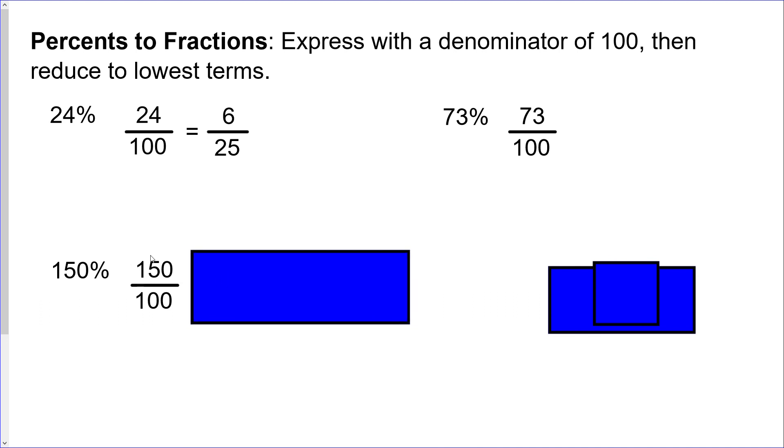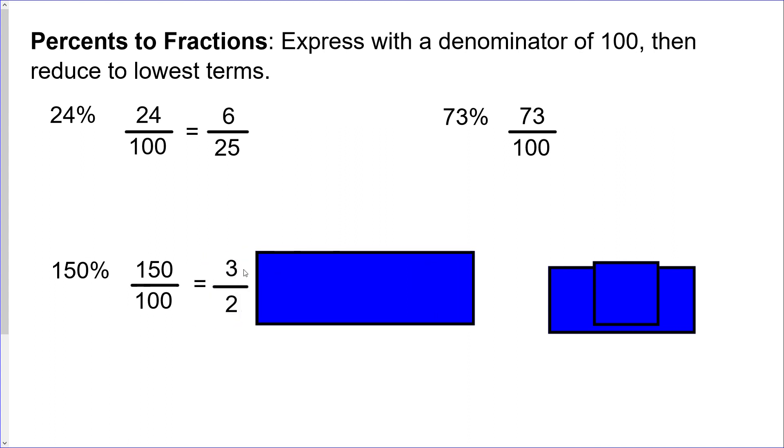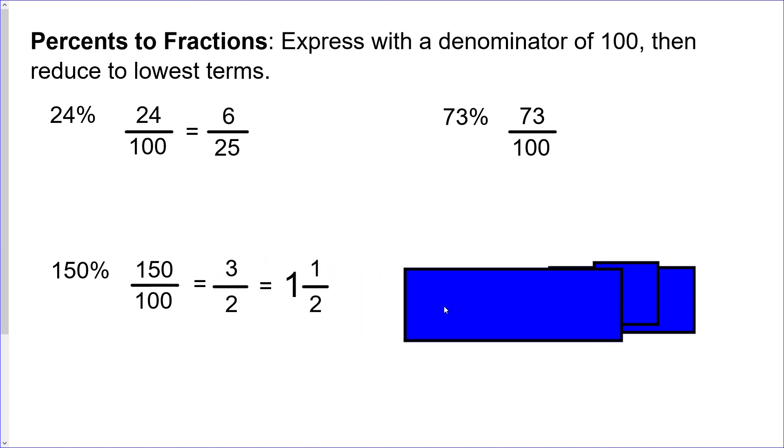Now when you get a number that's bigger than 100, you still do the same thing. You still put it over 100, but again, like we talked about before, you have to just be careful when your numerator is bigger than your denominator, because you should end up with a fraction. As you keep going down, make sure your fraction stays that way. So that can reduce to 3 over 2, or to 1 and 1/2 if you really like mixed fractions.